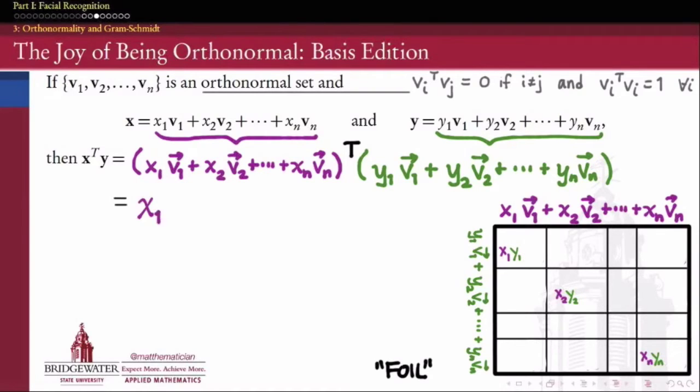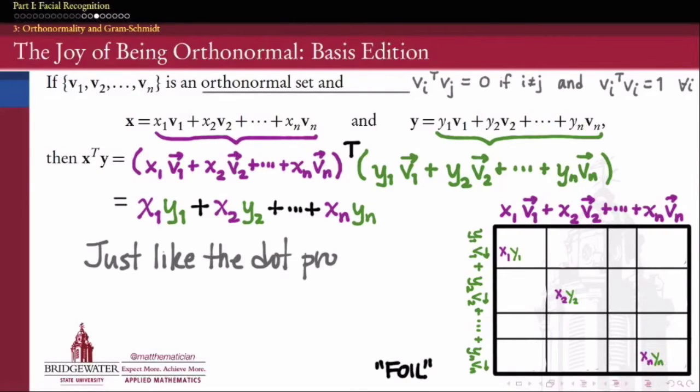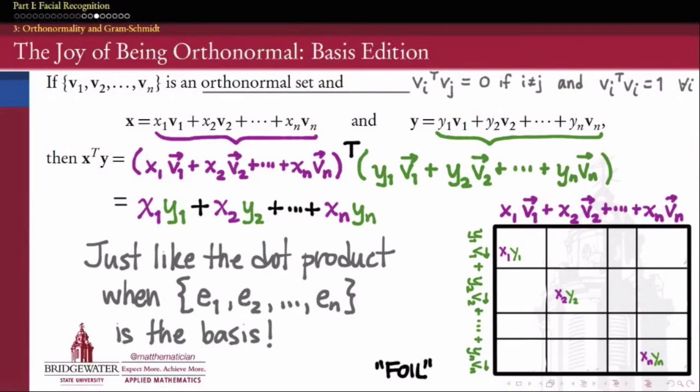And so those entries contribution to this foil is only x1 y1, x2 y2, up to xn yn. And so when all of the dust settles, x transpose y is merely equal to x1 y1, plus x2 y2, plus all the way up to xn yn. And therefore, when I express x and y with regard to any orthonormal basis, v1, v2, up through vn, then their dot product is exactly equal to the sum of the products of their components, just like the ordinary dot product when the orthonormal basis that we're working with is the standard basis chosen for Rn.